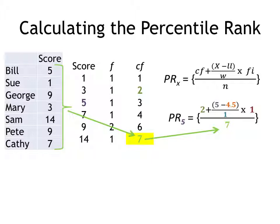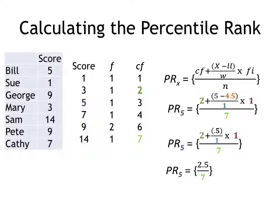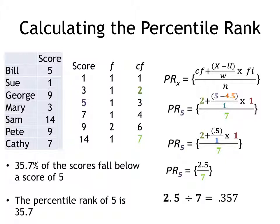Finally, I'm going to divide that all by the total number of scores we have, which is 7. Then we simply solve, remembering to use the right order of operations. And, big surprise, we find as we expected that a score of five is at the percentile rank of 35.7.